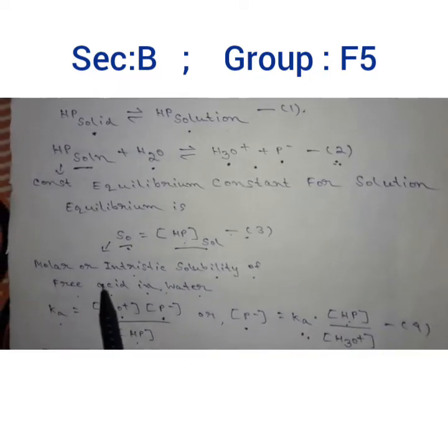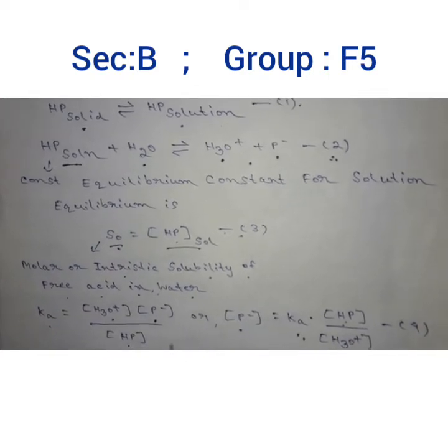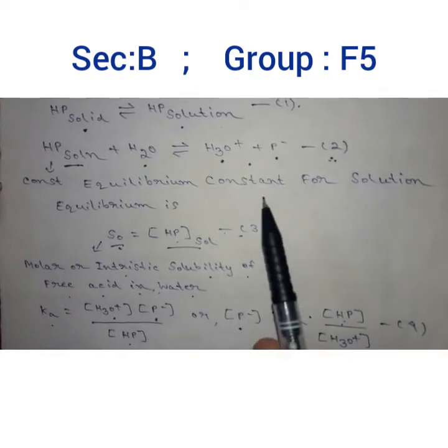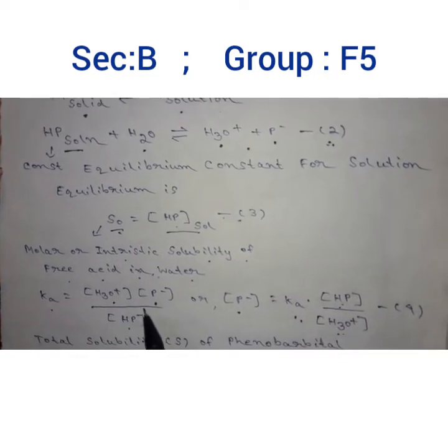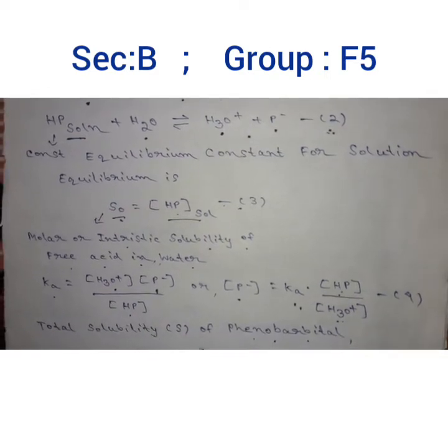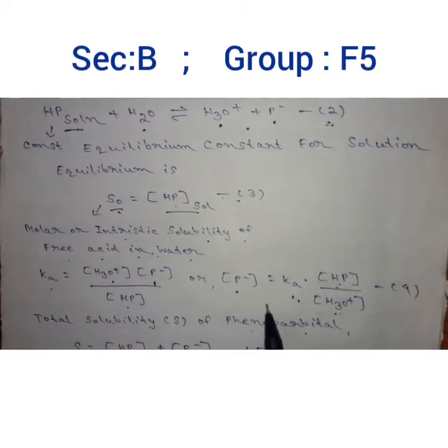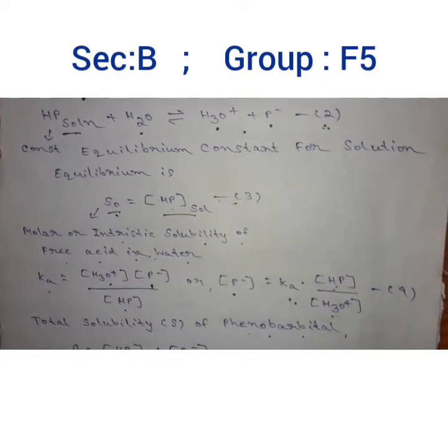So S0 equals the molar or intrinsic solubility of free acid in water. The acid dissociation constant of equation 2 is Ka = [H3O+][P-]/[HP], or [P-] = Ka[HP]/[H3O+].